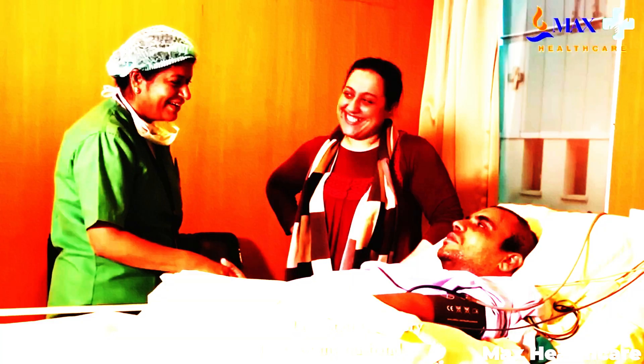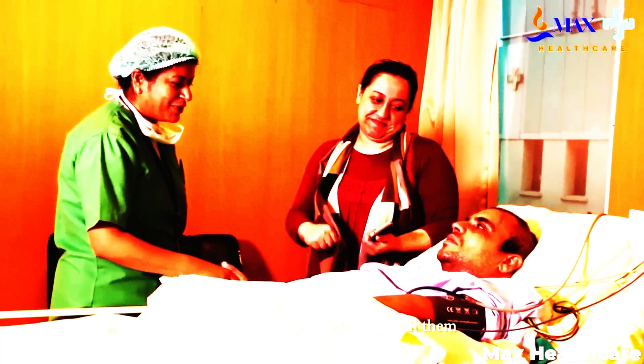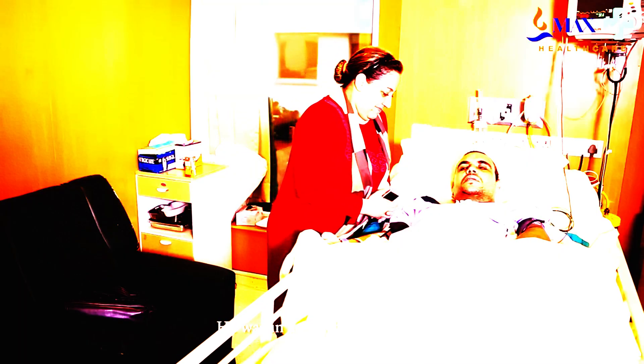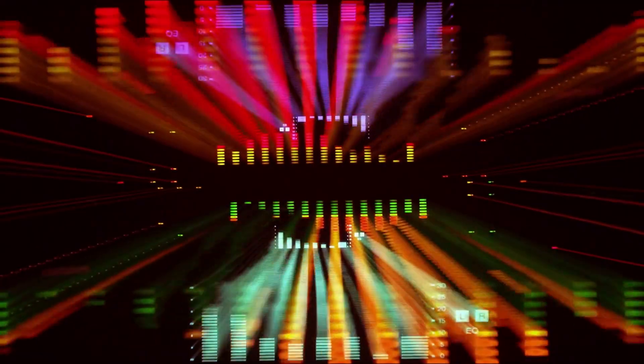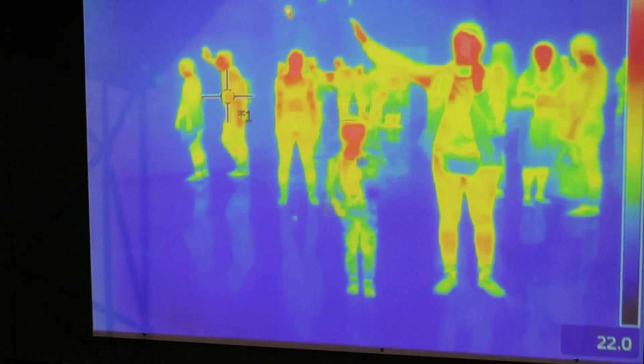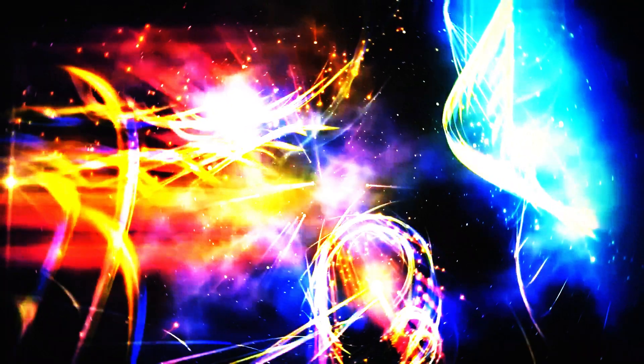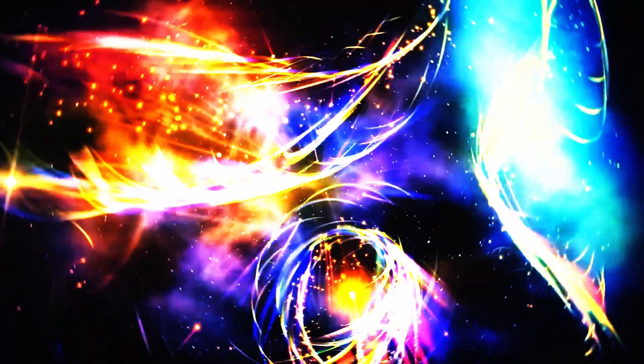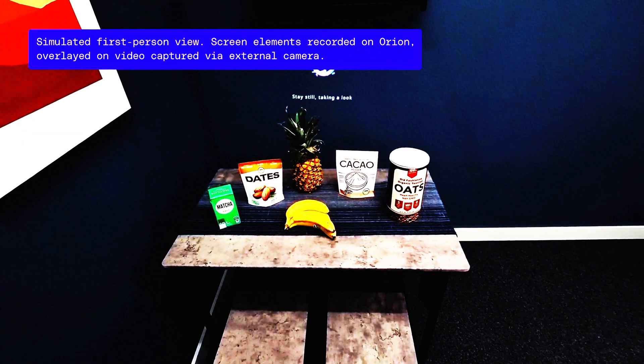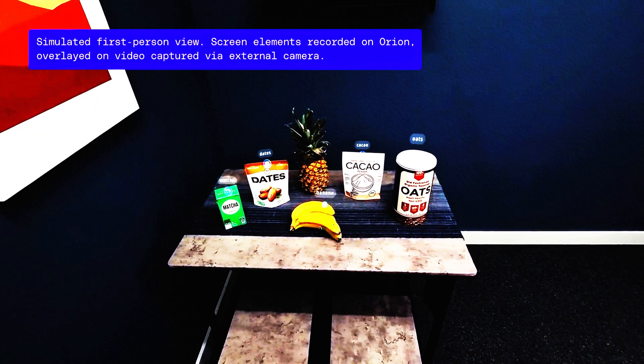And the cherry on top? Elon Musk isn't stopping at normal sight. He's promising future updates that could let you see outside the visible spectrum. Imagine walking through a dark room and seeing perfectly in infrared or spotting a gas leak with ultraviolet. Basically, superpowers just installed. Meanwhile, Meta's over here celebrating the fact that their $3,500 glasses can put a sticky note on your fridge in augmented reality. Bless their hearts.